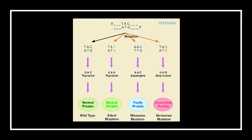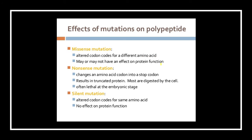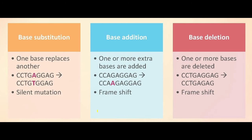Here is another diagram to understand the effects of mutation better. Missense mutation means an altered codon for a different amino acid, which may or may not have an effect on protein function. Nonsense means a stop codon results in a truncated protein; most are digested by the cell and it is often lethal, especially when changes occur at the embryonic stage. Silent mutation means the codon is altered but the same amino acid is produced, so there is no effect on the protein. There is also a frameshift mutation shown here, where an extra A is inserted or a G is deleted.